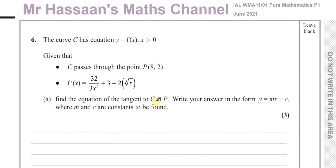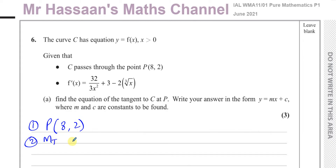Part a asks us to find the equation of the tangent to C at P, in the form y = mx + c. To find the equation of a tangent, which is a straight line, we need two things: the point the line passes through — that's P, already given — and the gradient of the tangent. The gradient at any point on a curve is found using its first derivative, which we already have.